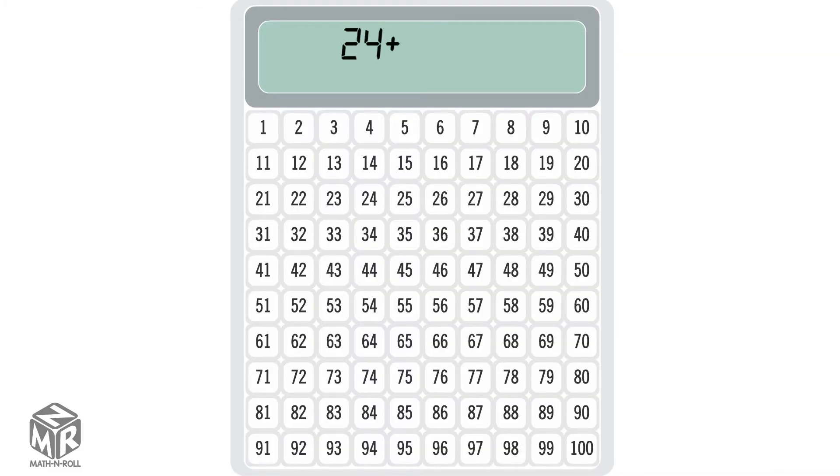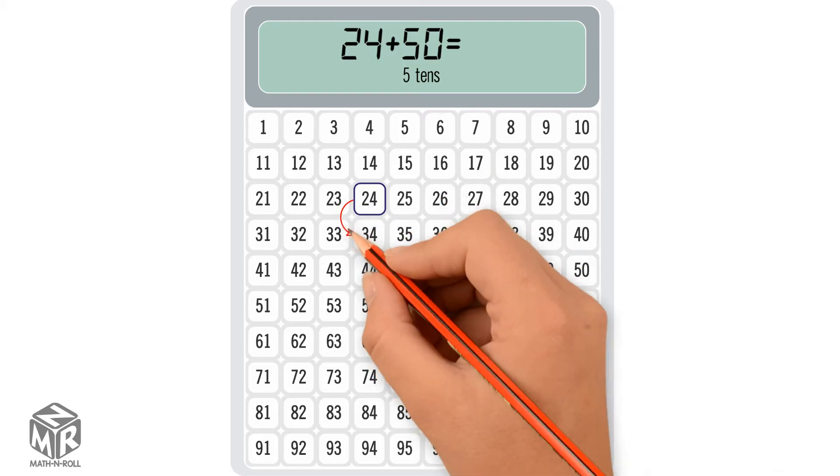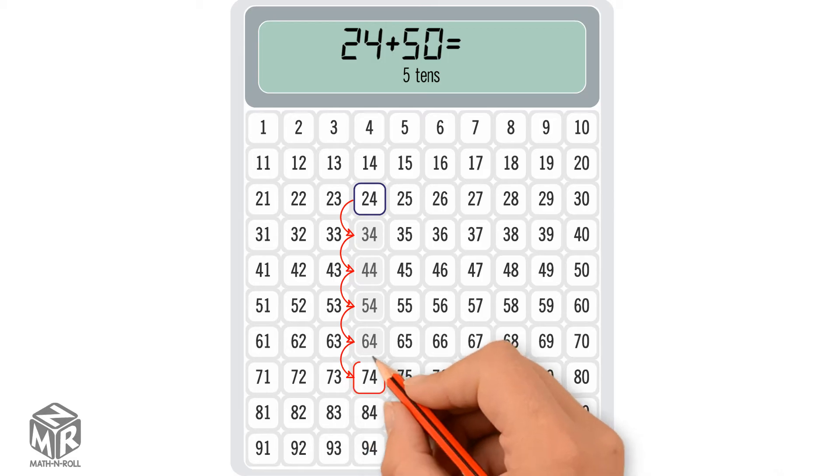24 plus 50. 50 is 5 tens, so we start at 24 and count 5 tens going down the column. We get 74.